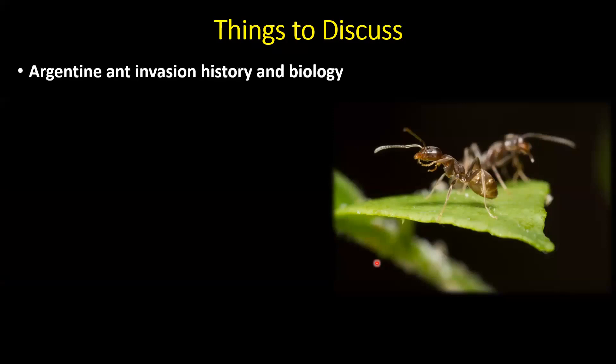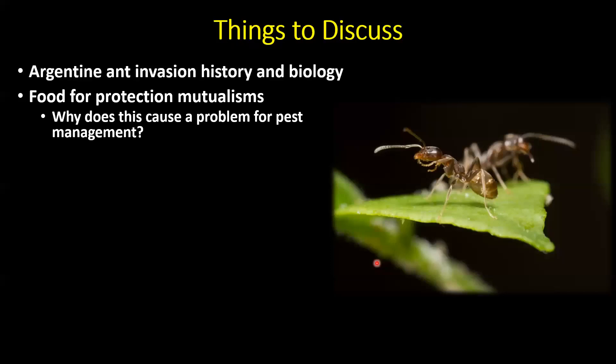We're going to spend a little bit of time talking about Argentine ant invasion and their history in California and globally. We'll go over aspects of their biology, focusing on what's most important for managers of these pests in citrus ecosystems or other perennial cropping systems such as vineyards. We'll discuss food-for-protection mutualisms and why this causes problems for pest management in citrus and grapes.